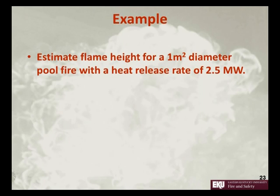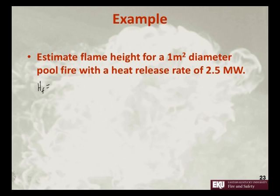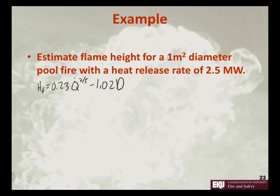Alright, so let's do an example. We're going to estimate the flame height for a 1 meter squared diameter pool fire with a heat release rate of 2.5 megawatts. The height of the flame is equal to 0.23 times the heat release rate to the 2/5 power minus 1.02 times the diameter.